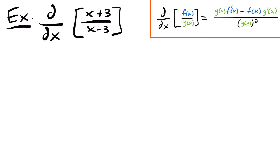Alright, welcome back. Let's start with this derivative right here. We have the derivative of x plus 3 divided by x minus 3. Now the first thing that we always do when we are using our quotient rule to take derivatives is identify what our numerator function is and our denominator function.